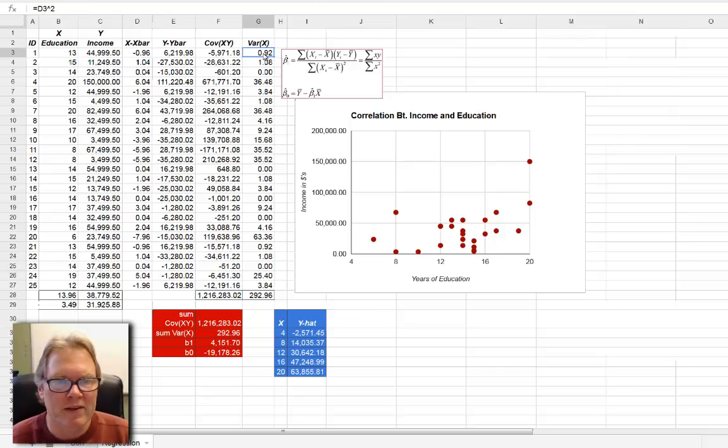As you can tell, the denominator is calculated a little bit differently, and that's done in column G. I'm taking each one of my deviations of each observed x from the mean of x, and I'm squaring it, and I do that for every number.